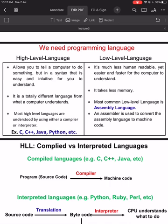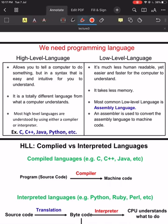There are two basic categories of programming languages: high level and low level. The general rule is that the categorization depends on how similar the language is to the only language a computer understands — machine code. I will talk more about machine code later in this lecture.